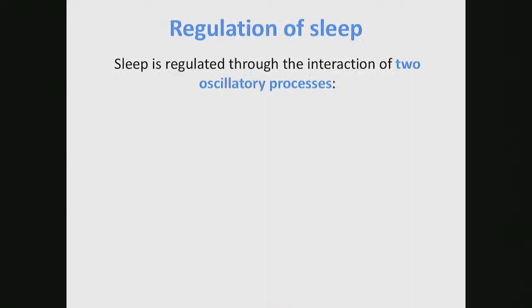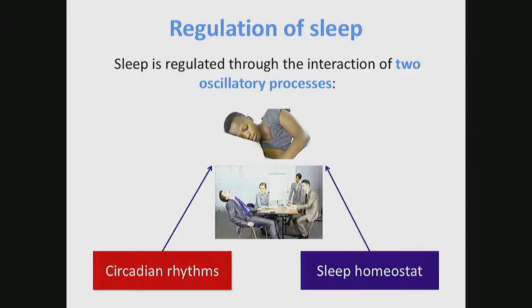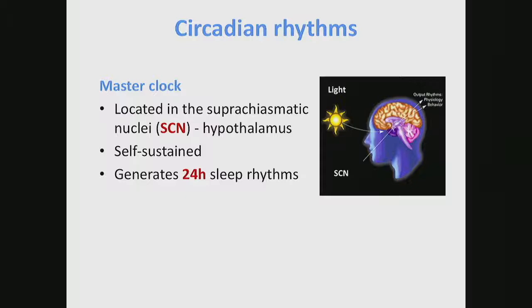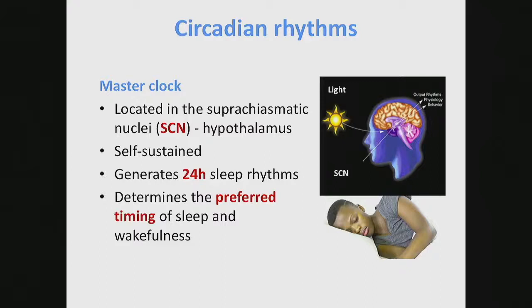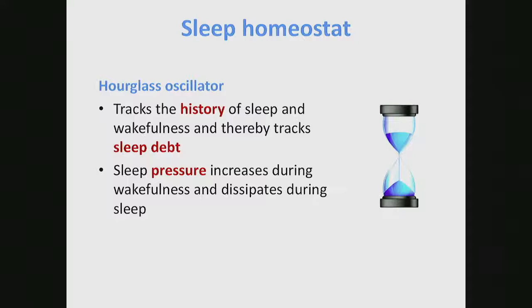So here comes the circadian bit. We have to think about how sleep is regulated - there are really two interacting oscillatory processes. On one hand, our circadian rhythms are involved in regulating sleep. On the other hand, there's something called our sleep homeostat. The master clock, located in the SCN, is endogenous, self-sustained, and generates 24-hour sleep patterns. It determines your preferred timing of sleep and wakefulness. A person with a slightly shorter circadian rhythm, or someone biased towards a morning type, will have a preferred earlier bedtime and earlier wake time. However, we also have to take into account that through the days and weeks and months, we accumulate sleep debt - that's the job of the sleep homeostat, which we call the hourglass oscillator. It tracks the history of sleep and wakefulness and therefore tracks debt.